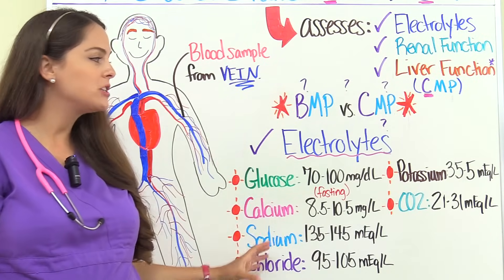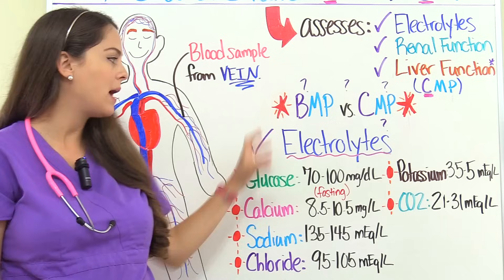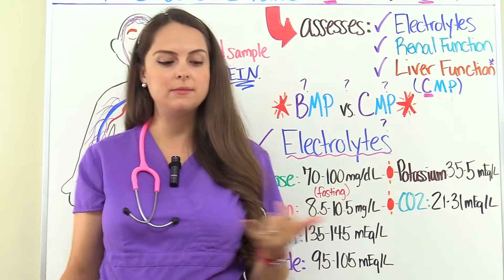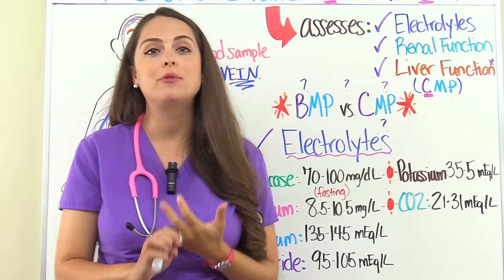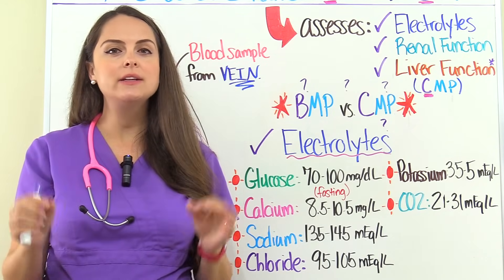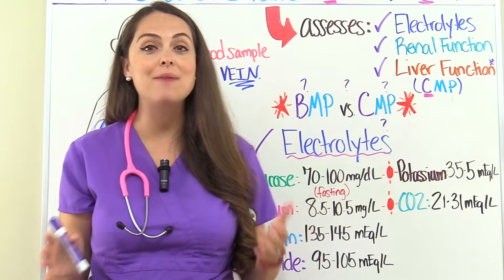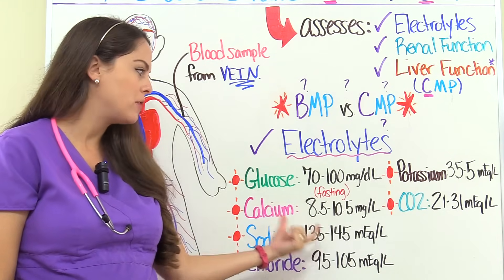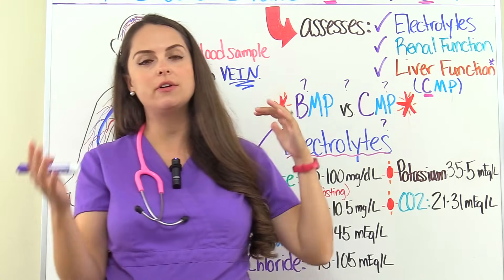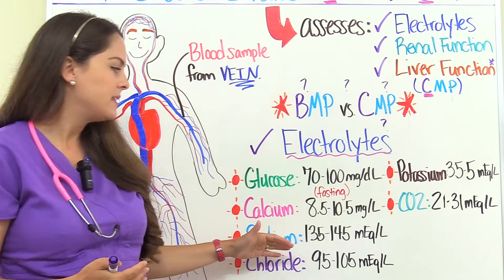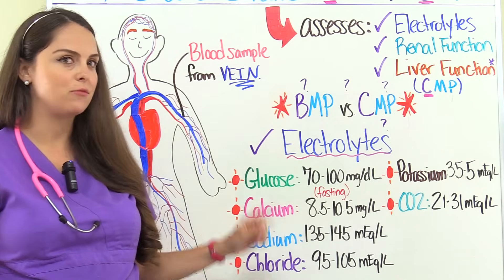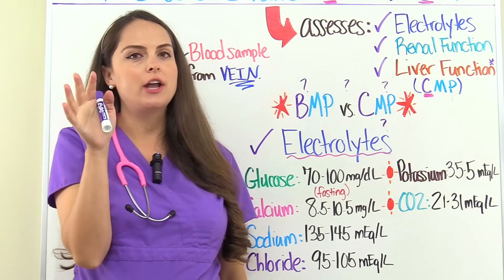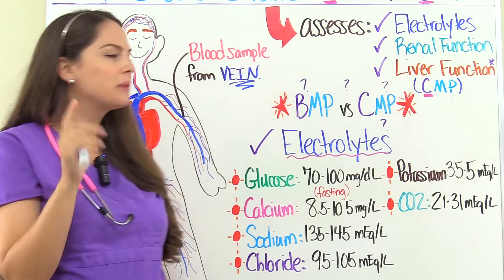Now let's talk about the normal reference ranges and causes for abnormal lab results in the electrolyte part of the metabolic panel. These reference ranges vary depending on the source and lab you're using. For exams, just know they'll give you something noticeably abnormal — like with sodium, they're not going to give you a borderline value. If testing hyponatremia, they'll give you something like 110 or 115; for hypernatremia, something like 180 or 200, so you'll clearly know it's not normal.